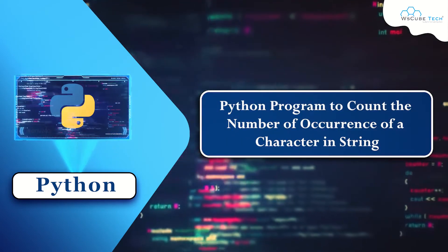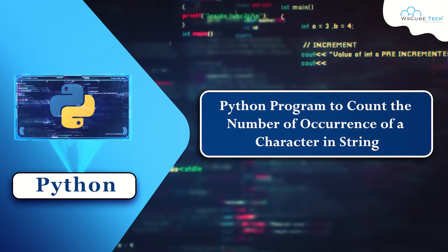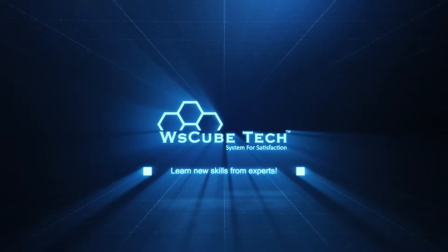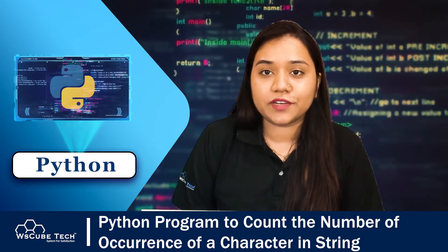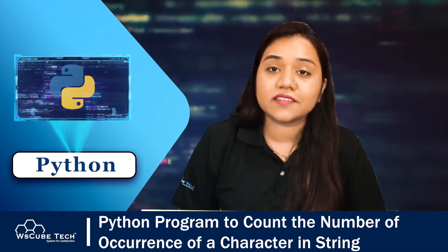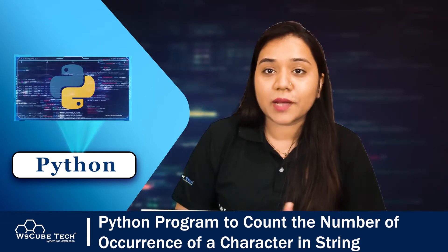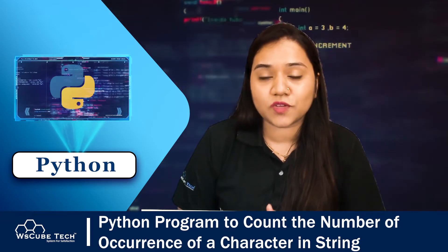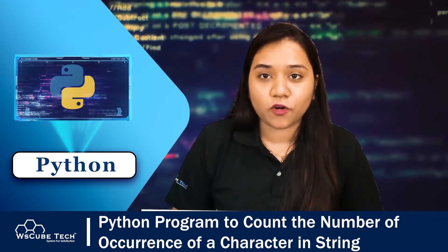The problem is to write a Python program to count the number of occurrences of a character in a string. Welcome to oskubetech, my name is Ayushi Jain. In this video we will learn how to write a program in Python that counts how many times a single character occurs inside a string. For example, in the word 'hello', counting how many times 'l' appears. There are two ways in Python: the first method uses a for loop, and the second uses the count function.